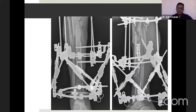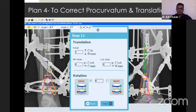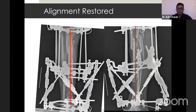While distal lengthening was continued, he developed angulation at the regenerate site due to some stress in the frame. I shifted the Ortho SUV struts between the proximal two rings to the distal two rings to correct the procurvatum and translation. Finally, the alignment was restored in both AP and lateral planes. There was a small callus bridging anteriorly in the lateral view.